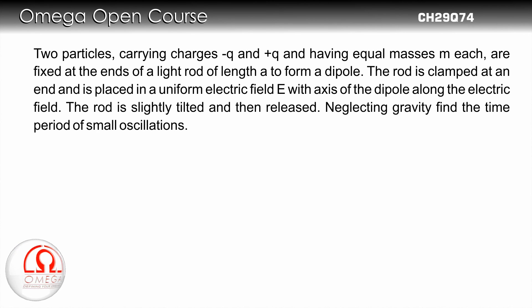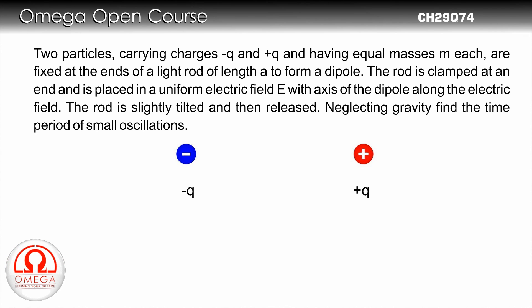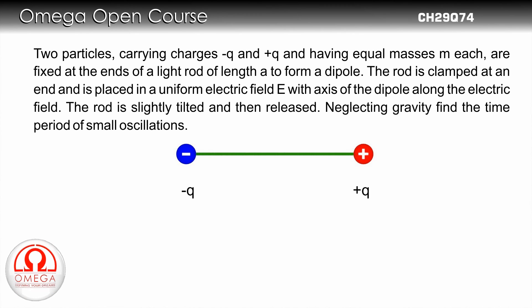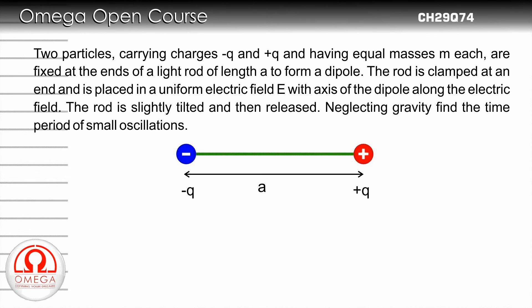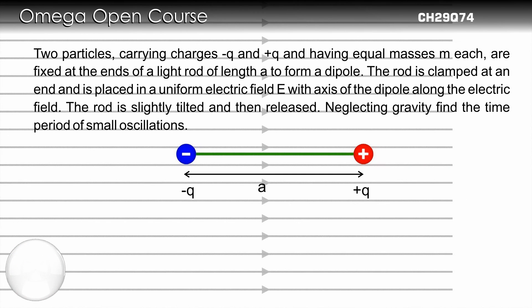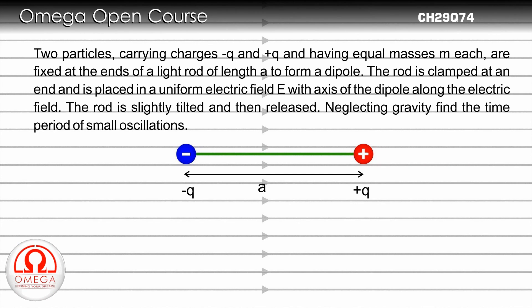Two particles carrying charges minus Q and plus Q, having equal masses m each, are fixed at the ends of a light rod of length A to form a dipole. The rod is clamped at one end and is placed in a uniform electric field E, with the axis of the dipole along the electric field.